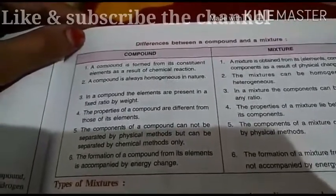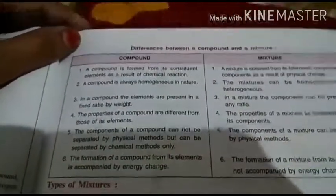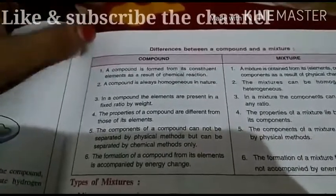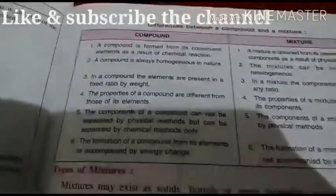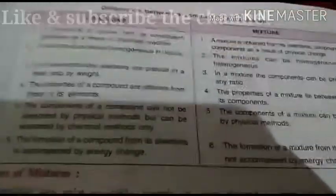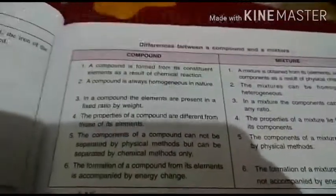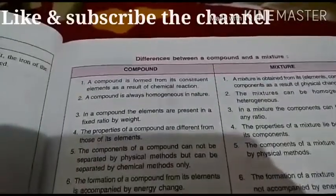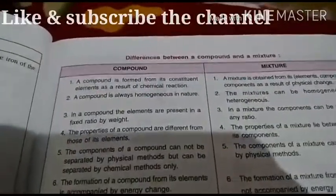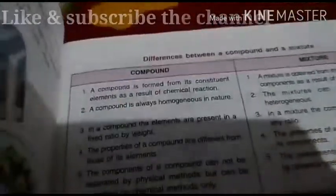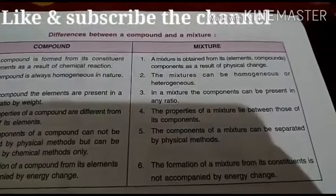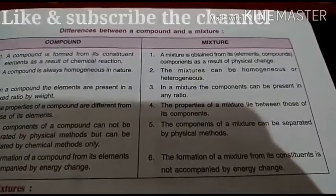When a compound is formed by combining two elements, the properties of those elements do not remain the same in the compound. So the properties of a compound are different from those of its constituent elements.